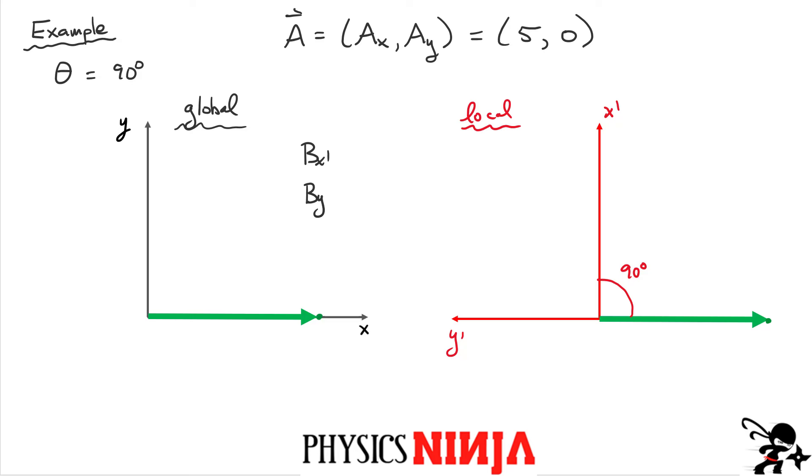Again, I would simply have BX. Just apply my rotation matrix. And this thing, it's cos of 90 degrees. What else? Sine of 90, minus sine of 90, and cos of 90 degrees. Multiplied by the components in the global coordinate system, 5 and 0.